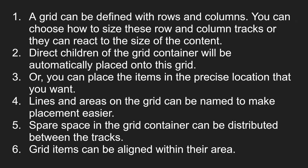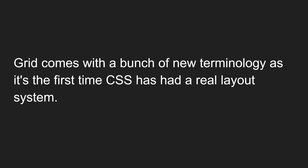Grid items can also be aligned within their area. These are the different features available in the CSS Grid layout. One important feature not available in Flexbox is named grids — we can create named grids that work with both rows and columns. Grid comes with a bunch of new terminology, as it is the first CSS that has had a real layout system. New terminologies include track, area, and lines.